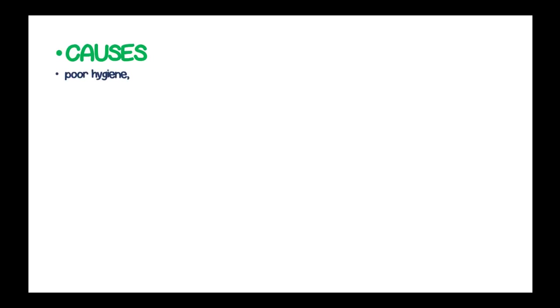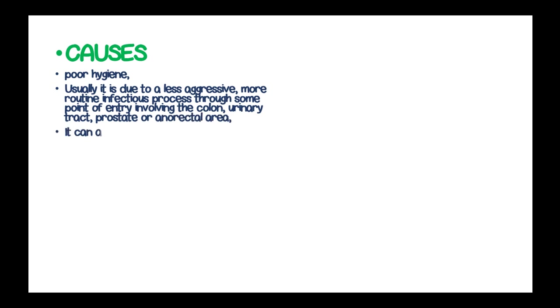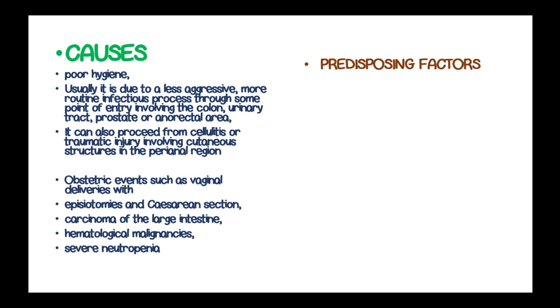The causes of Fournier's gangrene are related to poor hygiene, usually due to a less aggressive or routine infectious process through a point of entry involving the colon, urinary tract, prostate, or anorectal area. It can also proceed from cellulitis or traumatic injury involving the cutaneous tracts of the perianal region. Obstetric events such as adrenal derivatives, episiotomies, cesarean sections, carcinoma of the large intestine, and hematological malignancies with severe neutropenia can also lead to Fournier's gangrene.